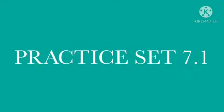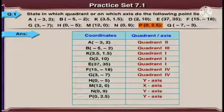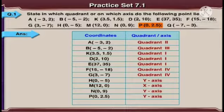Now students, let's do some questions from Practice Set 7.1. First question: state in which quadrant or on which axis do the following points lie? A(-3, 2), B(-5, -2), K(3.5, 1.5), D(2, 10), E(37, 35), F(15, -18), G(3, -7), H(0, -5), M(12, 0), N(0, 9), P(0, 2.5).